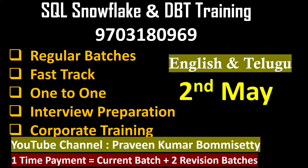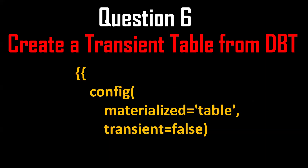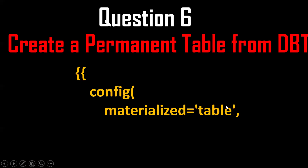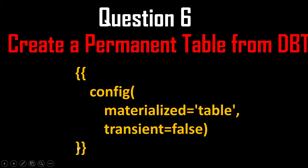The next question is: how to create a permanent table? Same thing — by using the config macro with 'materialized = table', it creates a transient table by default. To make it a permanent table, you add 'transient = false'. When you put 'transient = false', a permanent table will be created. As a dbt developer, you should know the difference between transient, permanent, and temporary tables. By using the config macro, you can create either a permanent or transient table.